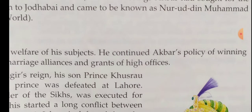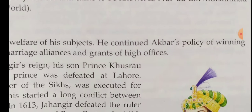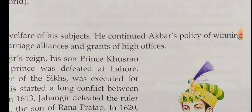Regarding relations with European traders, Jahangir granted trading rights to the Portuguese, who soon started misusing these rights. In 1615, Thomas Roe, an envoy of King James I of England, visited Jahangir's court. The main purpose of his visit was to seek protection for the East India Company's factory at Surat, Gujarat. Thomas Roe left an interesting account of life in the Mughal court.